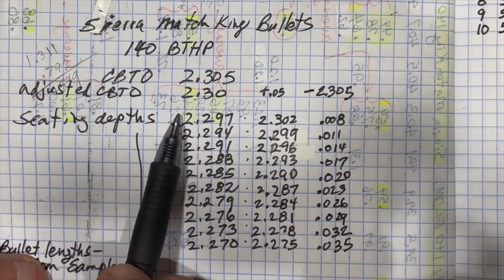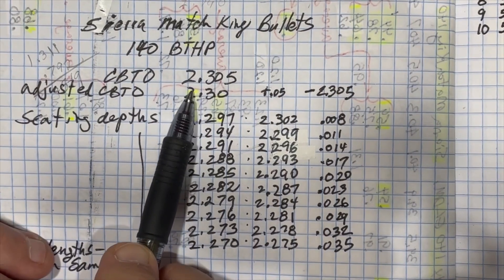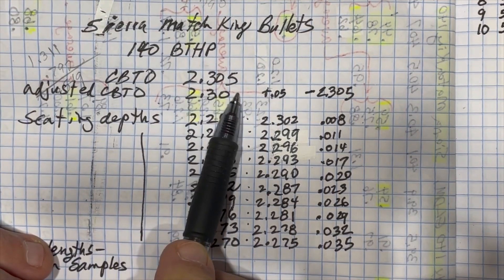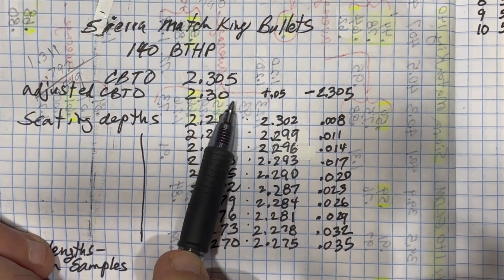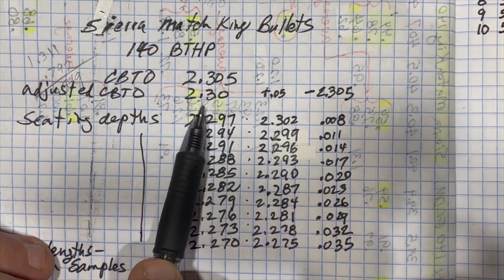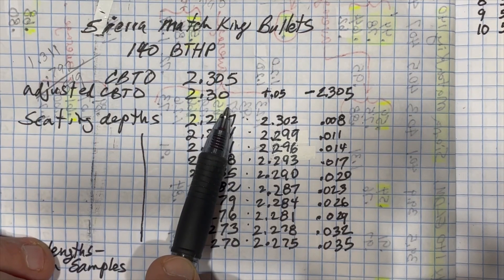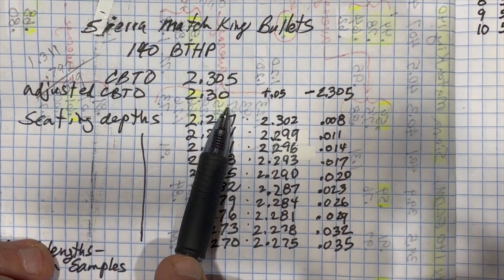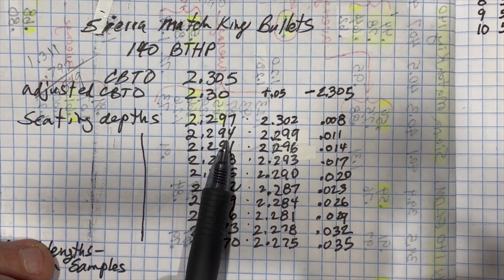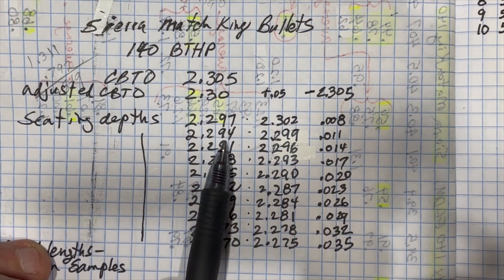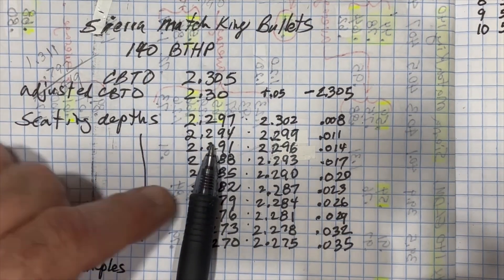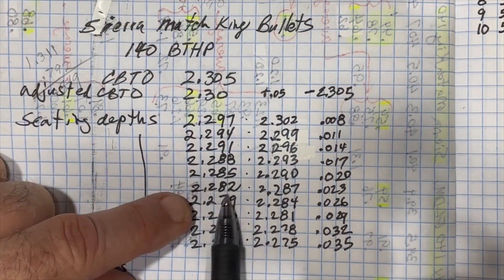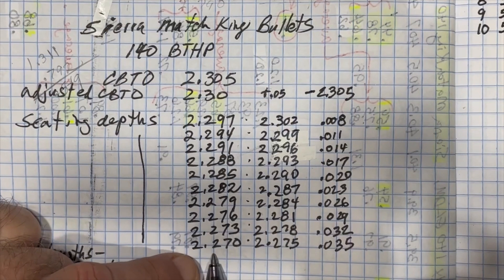With the comparator set, we determined that from the cartridge base to the ogive was 2.305 inches, and in order to be on the safe side, we were going to trim off 5 thousandths to 2.30 inches. We're going to load 10 five-shot groups, and we're going to step down three one-thousandths of an inch increments for each of those. So we're going to have seating depths at 2.297, 2.294, 2.291, etc., coming down three-thousandths increments to 2.270.